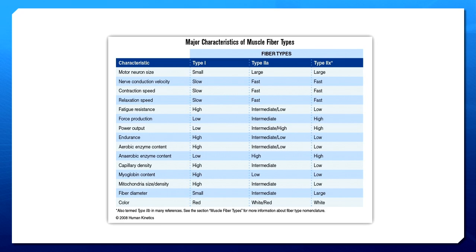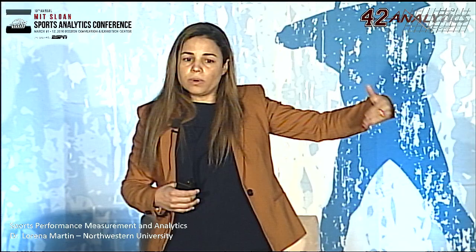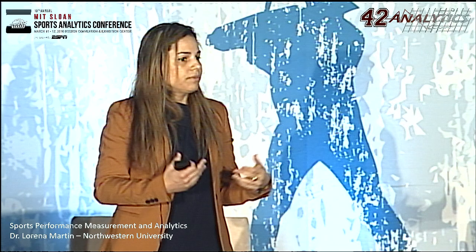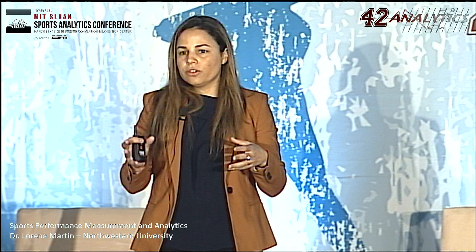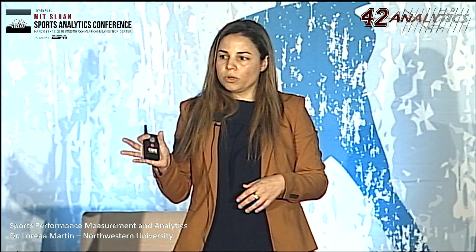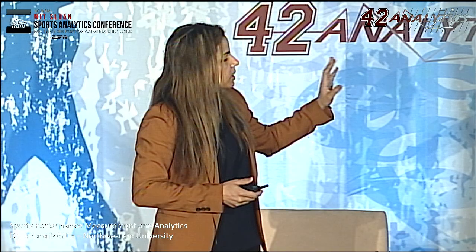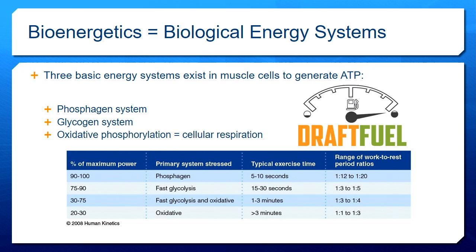This is somewhat genetically predetermined, but this is not meant to say you should exclude everybody without type two fibers from being a track athlete. This is meant to guide how they should be training. One last thing I want to bring your attention to is mitochondria size and density, which is very important. The mitochondria is a little engine in your cell that can generate ATP, which is energy. The mitochondria generates ATP but utilizes oxygen — this is where aerobic and anaerobic training really stems from. I'm going to cover three energy systems before we go into more of the measurement and analytics.